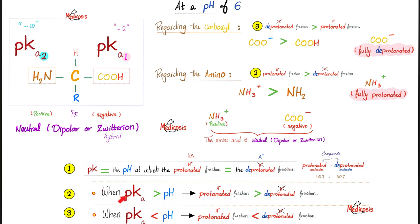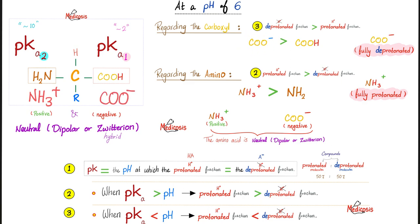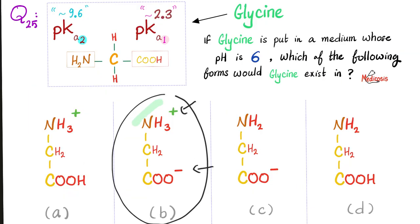When PKa exceeds pH — as on this side, where PKa is about 10 and pH is 6 — the protonated fraction will exceed the deprotonated fraction. The protonated fraction here is NH3+, lots of protons which are positive. So the amino fraction will exist as NH3+. On the other side, PKa is lower than the pH, which means the deprotonated fraction will win. Deprotonated means without protons — COO negative. So this side exists as COO negative. A positive charge on one side, a negative charge on the other — it's a hybrid, a zwitterion. And this will be my final answer.